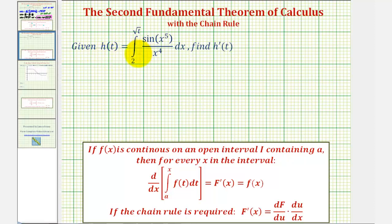We're given h of t equals the integral of sine x to the fifth divided by x to the fourth, from two to the square root of t. We want to find h prime of t, or the derivative of h of t.